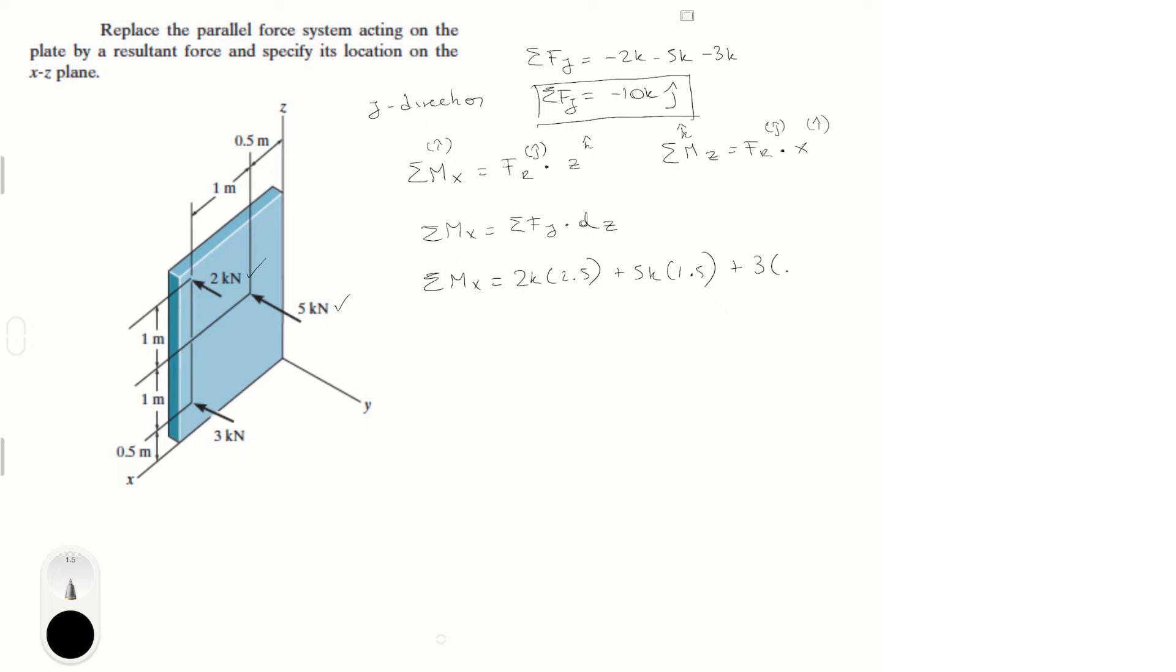plus 3 times 0.5, which is the last force and the distance with the x axis. Apply this into your calculator and you get 14 kNm, sum of the moments of the x.